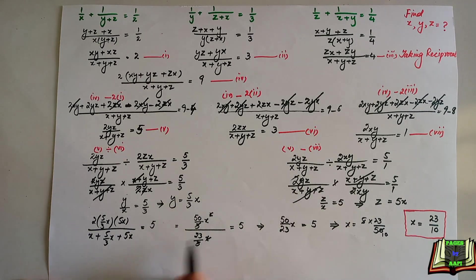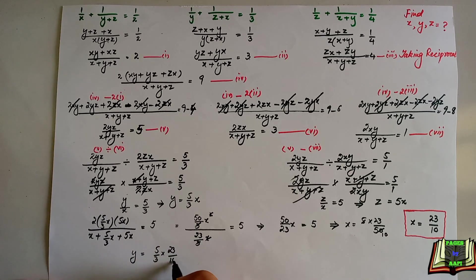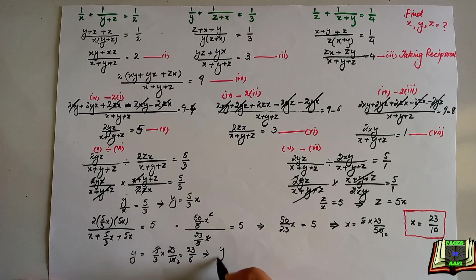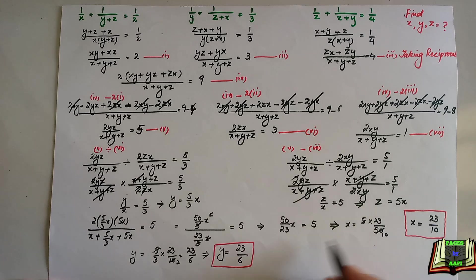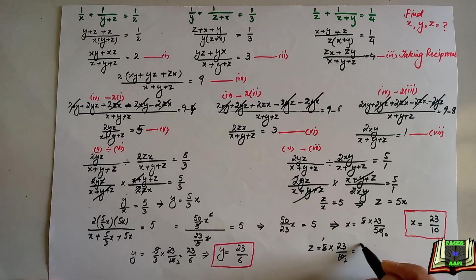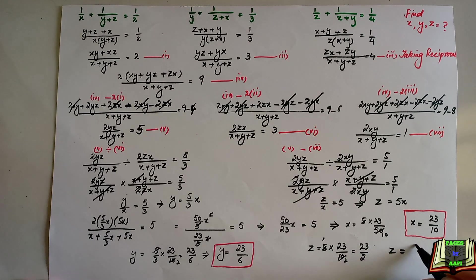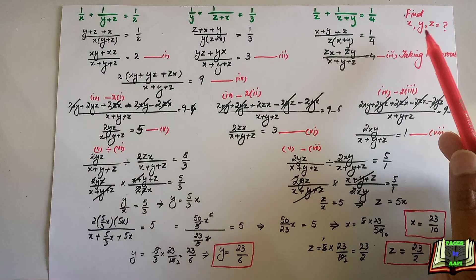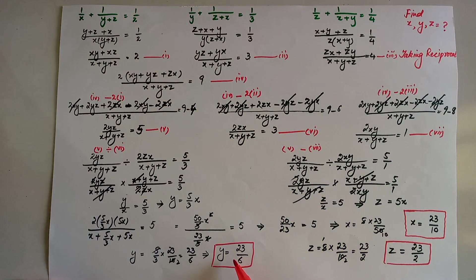Putting x equals 23/10 into the expressions for y and z: y equals 5x/3 equals 5×(23/10)/3 equals 23/6. And z equals 5x equals 5×(23/10) equals 23/2. So the final answers are x equals 23/10, y equals 23/6, and z equals 23/2.